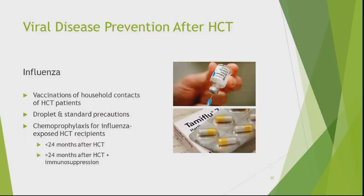For community respiratory viruses — RSV, adenovirus, enterovirus, and others — the big one is influenza. Vaccinate, vaccinate, vaccinate. Vaccinate all household contacts, and healthcare providers should be vaccinated. Implement droplet and standard precautions if patients get influenza. Consider oseltamivir chemoprophylaxis for a couple of days during a community outbreak for patients less than 24 months after transplant, or even longer if they're on high-dose immunosuppression.